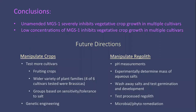What does this mean? Unamended Mars Global Simulant 1 severely inhibits vegetative crop growth in multiple cultivars — and not just at 100% concentration; this occurs at low concentrations as well. This means that the regolith will need to be altered in some way in order to become a viable resource for crop growth on Mars.